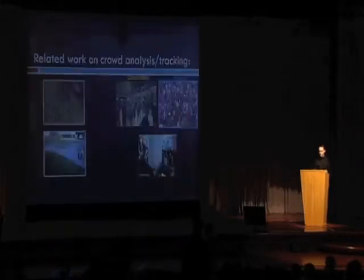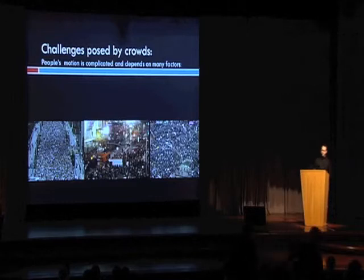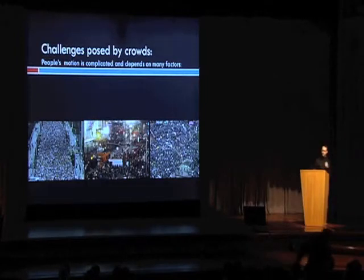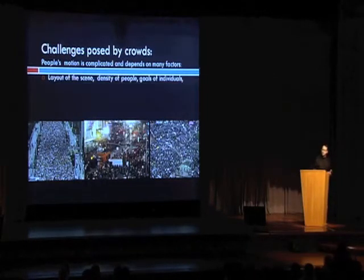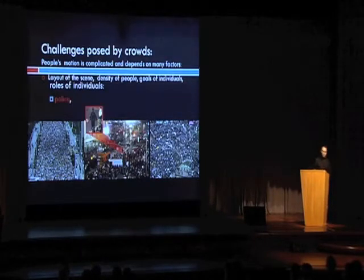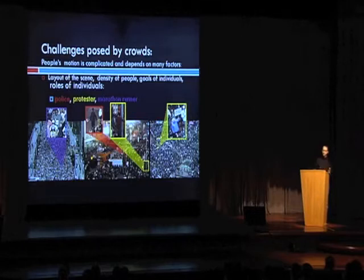Another challenge posed by crowds is the fact that a person's behavior is complicated and depends on many different factors. The assumption that a mass of people behaves more or less the same is usually incorrect. A person's behavior depends on things such as the layout of the scene, the density of the people, and the goals of an individual within the crowd. Also, the role of an individual within the crowd is very important — whether you be a police officer, protester, or marathon runner, your emotion and behavior within the crowd is closely tied to this role.